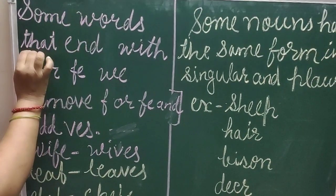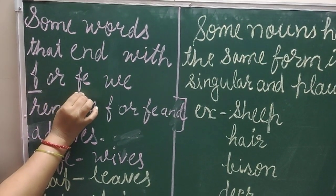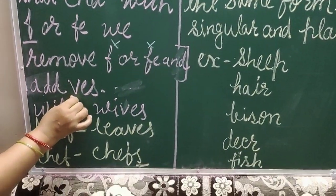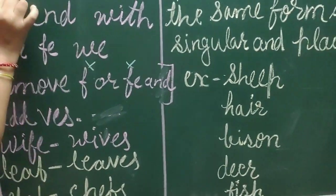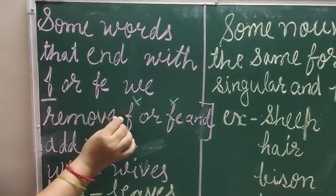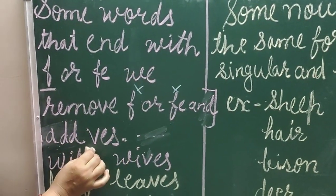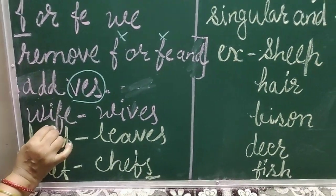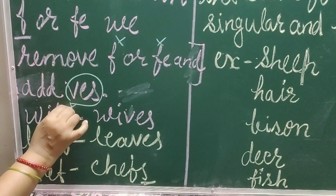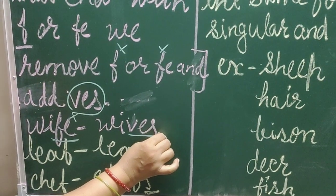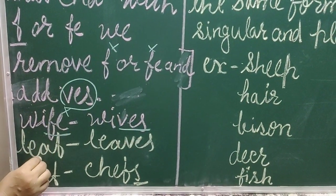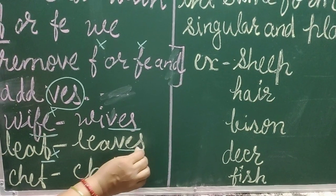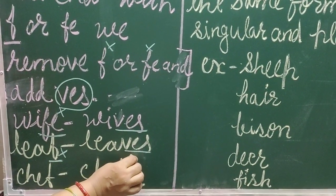There is another rule. Some words that end with F or FE — we remove F or FE and add VES to make a plural. For example, wife ends with FE, so we remove FE and add VES to make it plural, wives. In the same way, leaf — the last letter is F, so we remove F and add VES. Leaf is the singular word and leaves is the plural word.